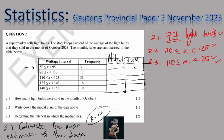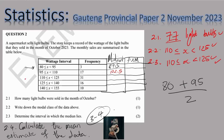For the first interval, the midpoint is (80 + 95) ÷ 2 = 87.5. The next midpoint is (95 + 110) ÷ 2 = 102.5. The next is (110 + 125) ÷ 2 = 117.5. Complete the remaining midpoints in the same way.